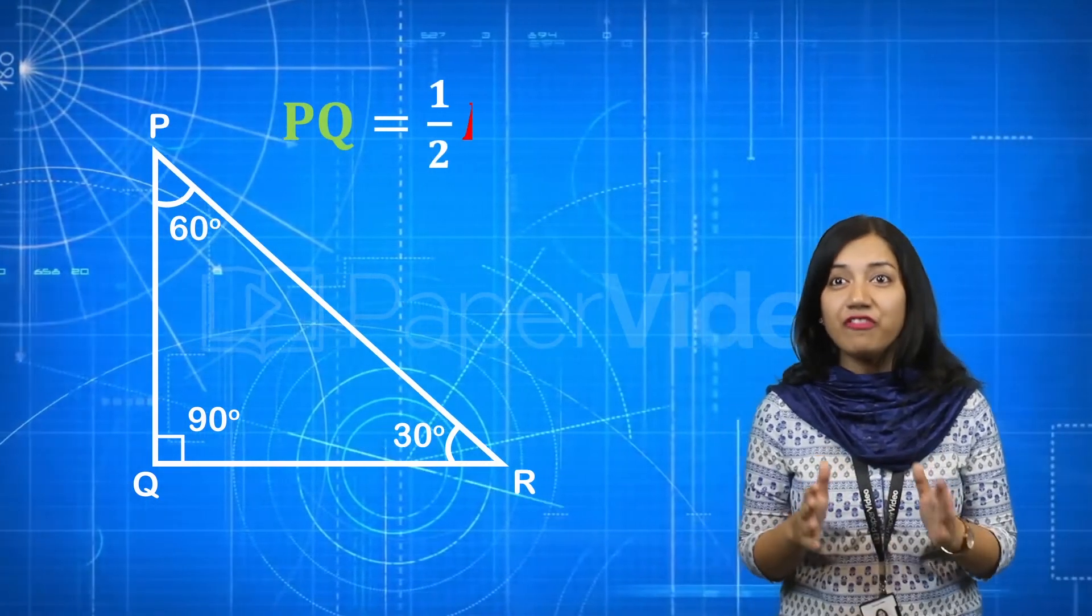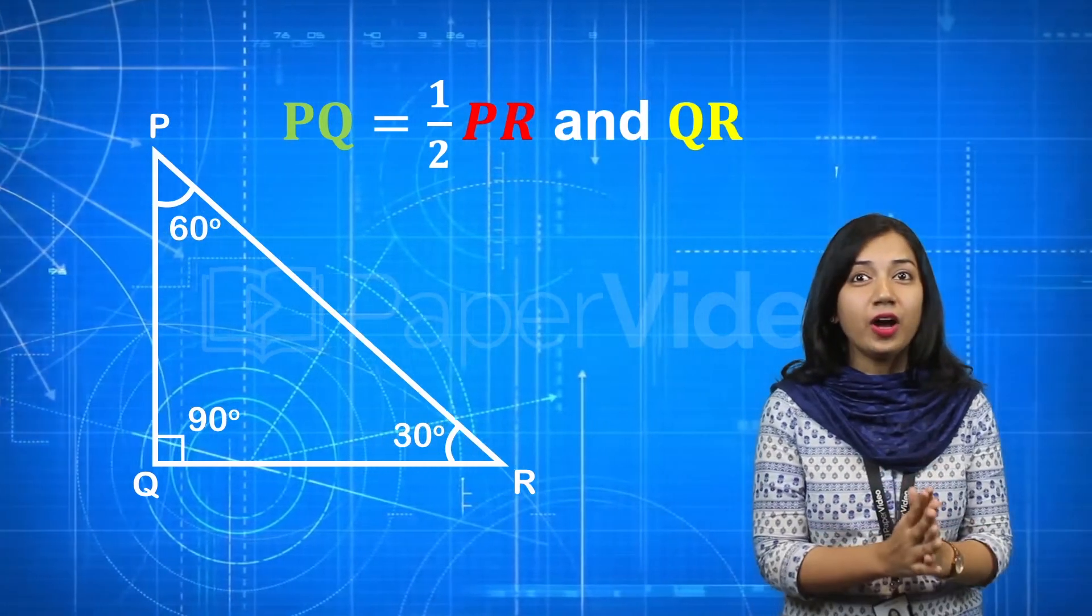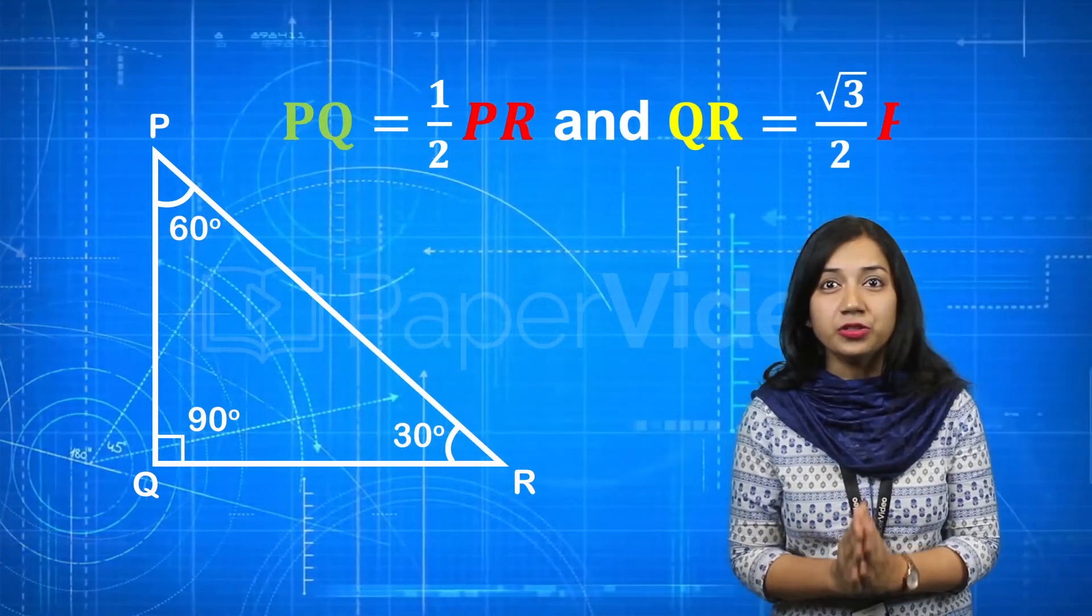It says in such a triangle PQ equals half of PR and QR equals root 3 by 2 PR.